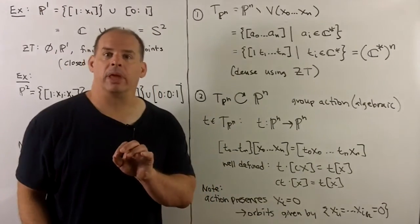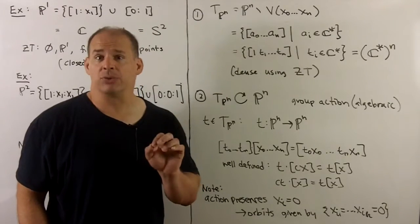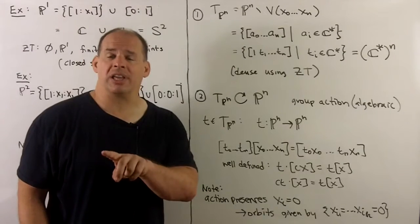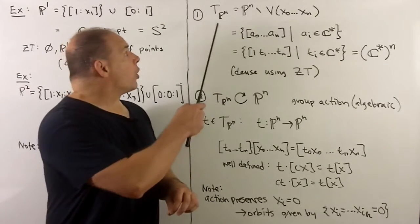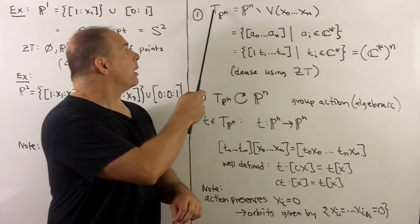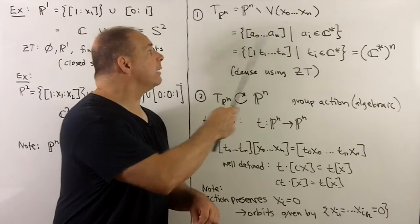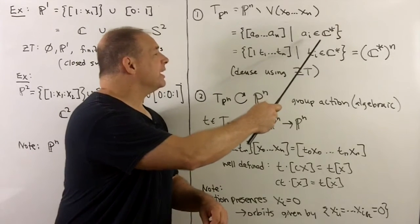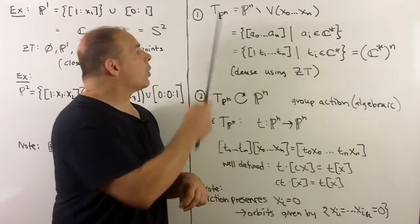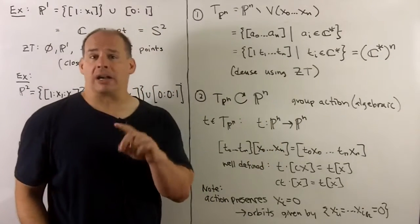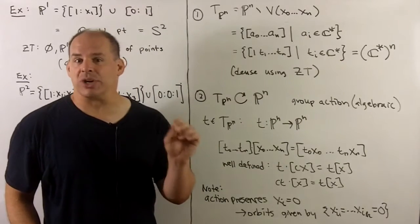Moving to toric varieties: projective n-space is going to be our model for a complex projective toric variety. We need a dense torus and a torus action that's algebraic. Our torus inside P^n consists of all classes that have non-zero entries — we take [a_0 : ... : a_n] with all a_i non-zero. Since they're all non-zero, we can divide through by a_0, leaving a one in front. That shows this torus is just an n-fold product of C*'s, and it's not hard to check it's dense using the Zariski topology.